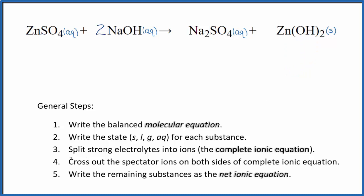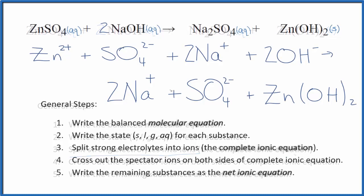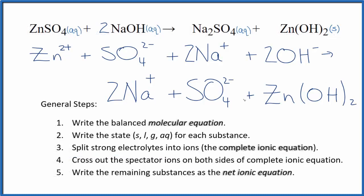Now we can split the strong electrolytes into ions for the complete ionic equation. That looks like this. So this is the complete ionic equation. Now we can cross out the spectator ions. And note we didn't split the zinc hydroxide apart because that's a solid, so we kept that together. But everything else, we split that up.